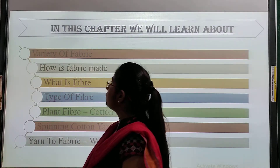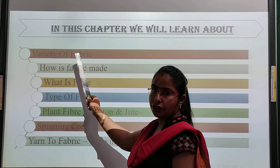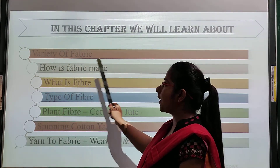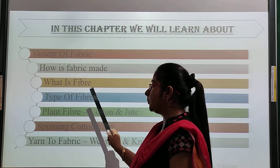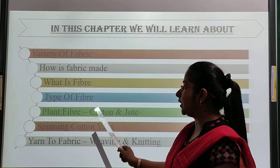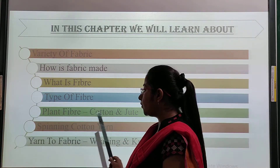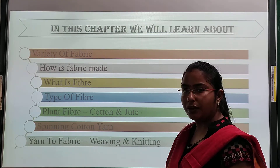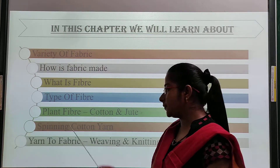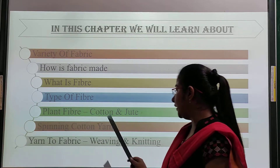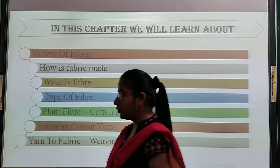First we will see what we have to learn in this chapter. The sub-topics are: variety of fabrics, how is fabric made, what is fiber, types of fiber — plant fiber and animal fiber. I will explain about cotton and jute, then spinning of cotton yarn — that is how we can make cotton clothes — yarn to fabric, and weaving and fabric. These are the sub-topics we will study in this chapter.